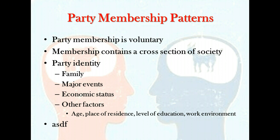It is true that members of certain segments of the electorate tend to be more solidly aligned with one major party. In recent decades, African Americans, Catholics and Jews, and union members have voted more often for Democrats, while white males, Protestants, and the business community have been inclined to back the GOP. Yet never have all members of any group tied themselves permanently to either party. Individuals identify with a party for many reasons; family is almost certainly the most important, with studies showing nearly two out of three Americans follow the party allegiance of their parents. Major events like the Civil War and the Depression of the 1930s have also had a decided influence on party affiliation.